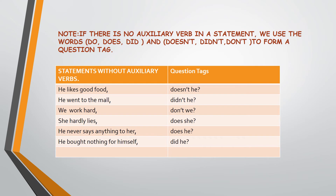Please note that every sentence does not need to have an auxiliary verb. Hence we use the words do, does, did and doesn't, didn't, and don't to form question tags. In the case of positive statements, we use negative question tags. For example: 'He likes good food, doesn't he?' 'He went to the mall, didn't he?' 'We work hard, don't we?'